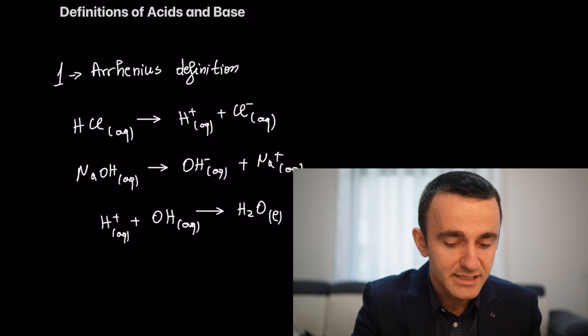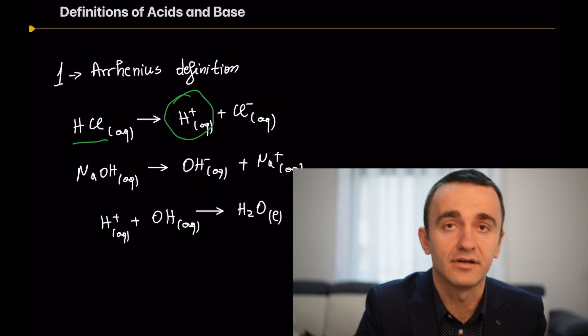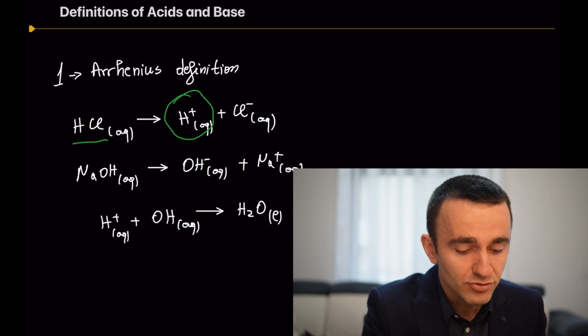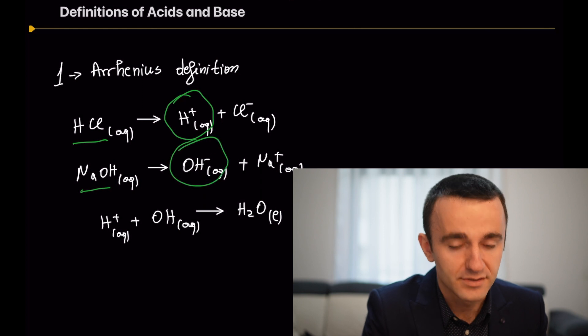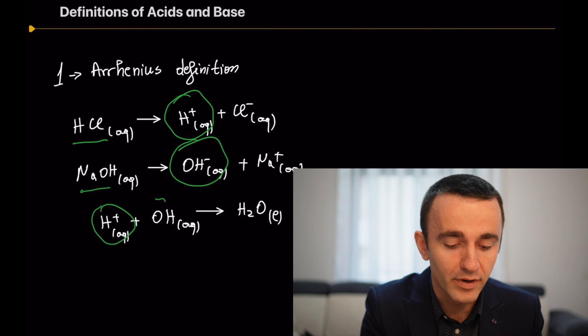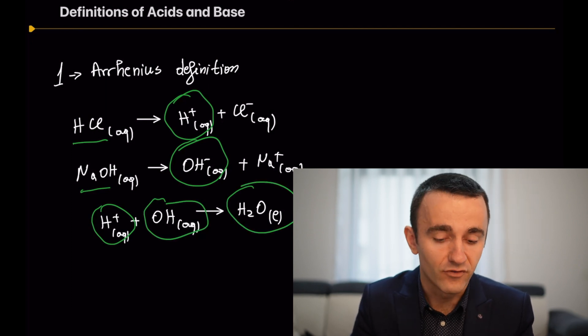For example, sodium hydroxide produces OH- in aqueous solution. Under the Arrhenius definition, an acid and a base combine to form water, neutralizing each other in the process. As you can see in this simple example, hydrochloric acid produces H+ ions and is an acid, sodium hydroxide produces OH- and is a base, and H+ and OH- combine, neutralizing each other and forming water.